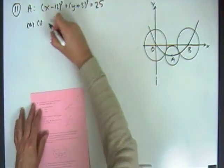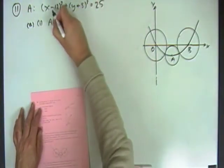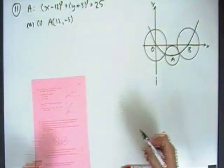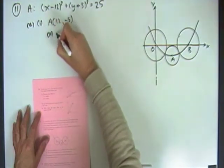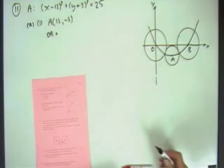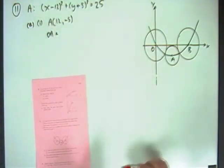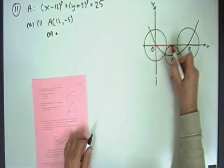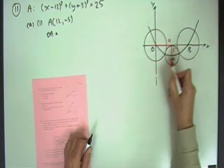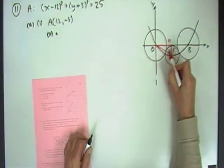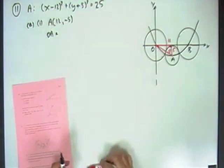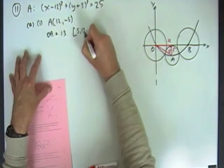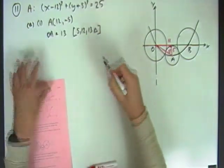So first of all, centre, so we'll just say A is, again it'll just be the opposite of these, 12 along, 5 down, and then the distance, the length of OA. Well that's quite easy actually, you don't really need to do your Pythagoras because you know this, just indicating the diagram, now that's 12 along and 5 down, then that is a 5, 12, 13 triangle.